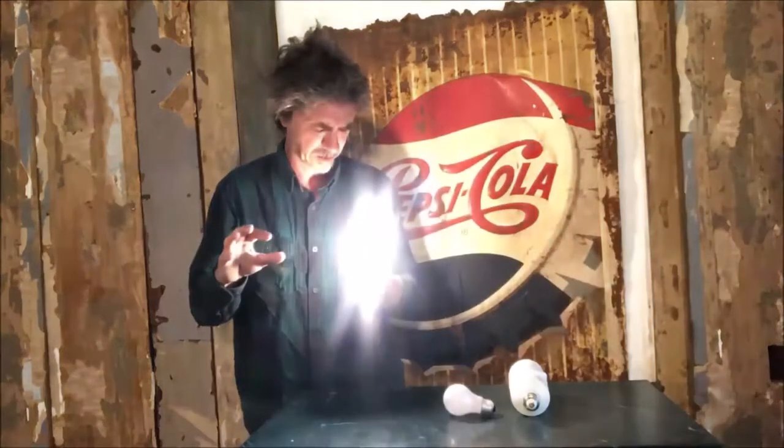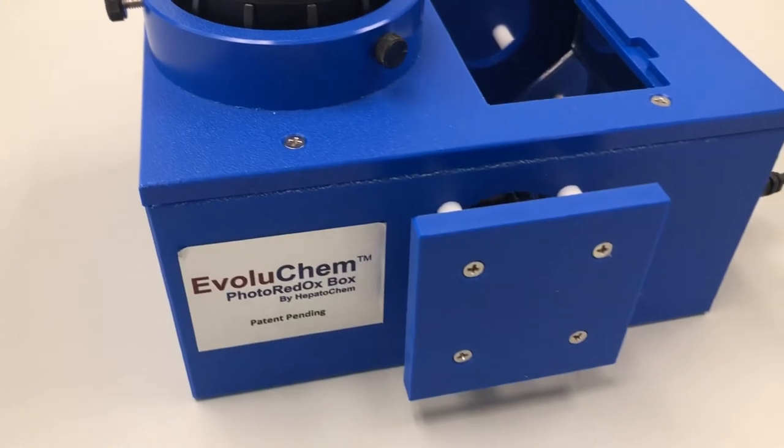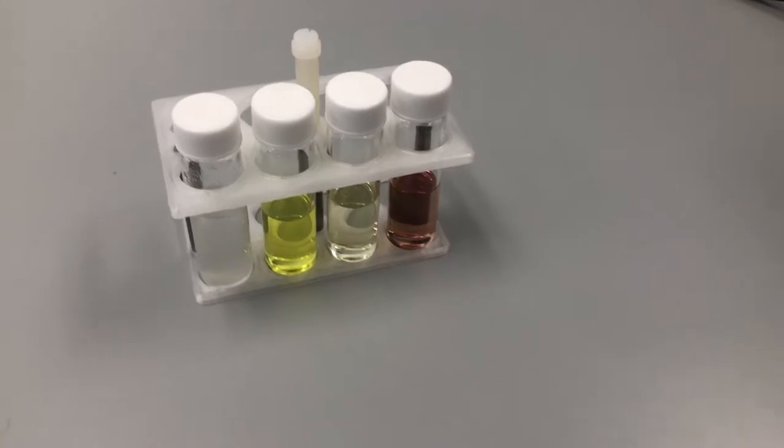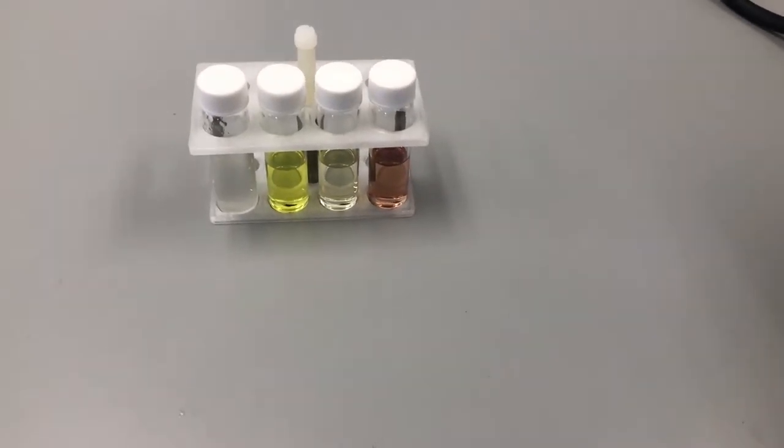But then we got an idea. We have a photoreactor, specifically our very own photoredox box, and we have some basic catalysts that will fluoresce the three primary colors of your standard traffic light.